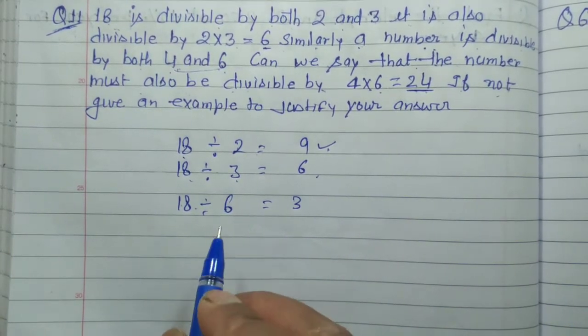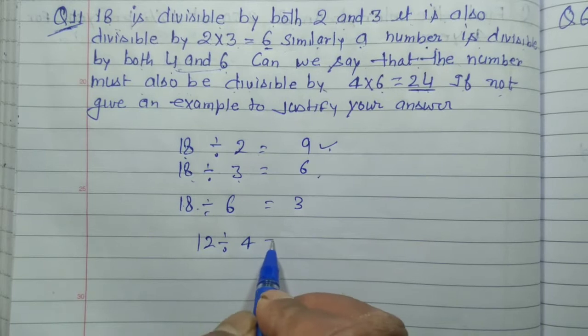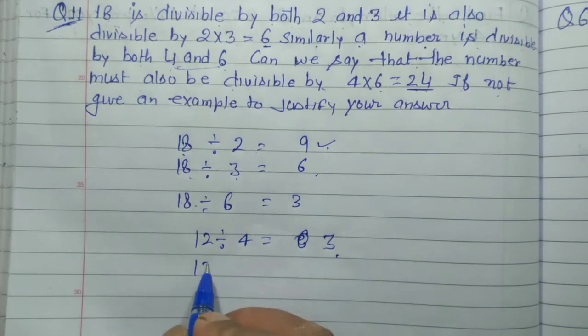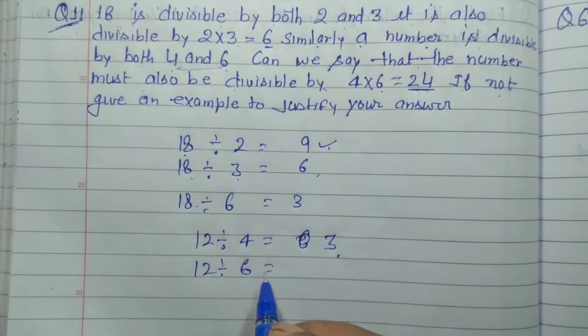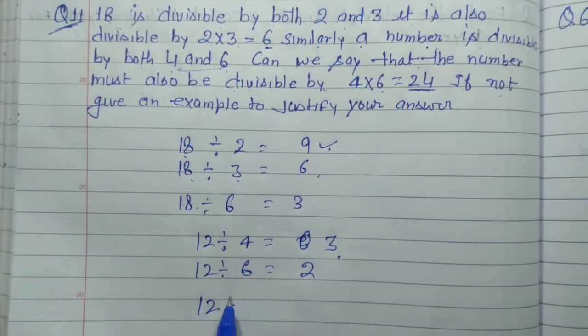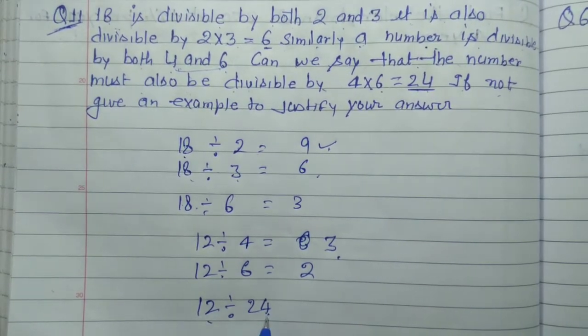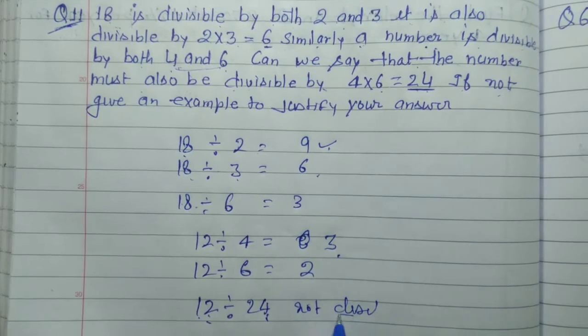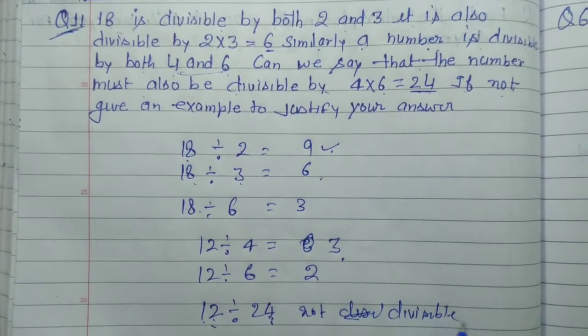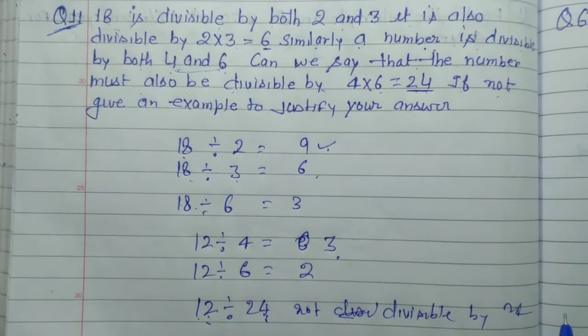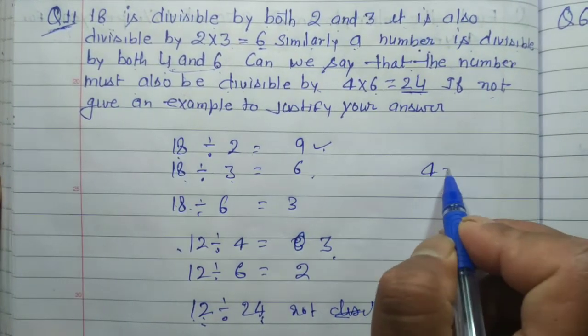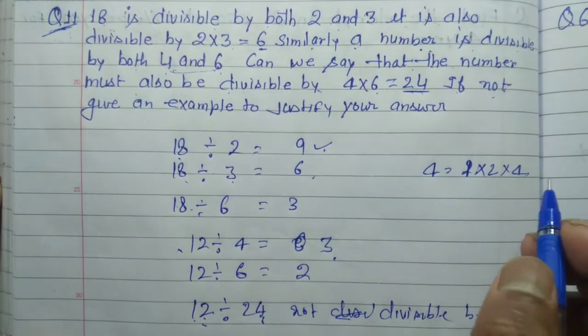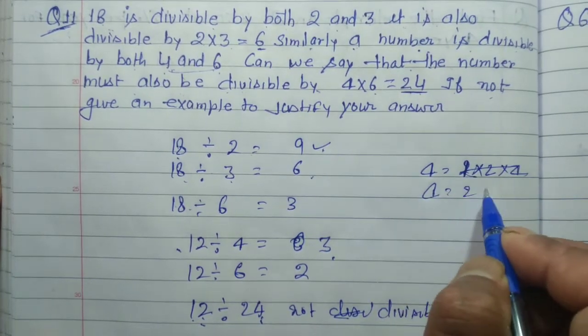If we take an example, 12. 12 divided by 2 equals 6. 12 divided by 4 equals 3. 12 divided by 6 equals 2.